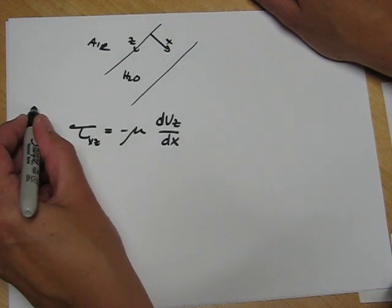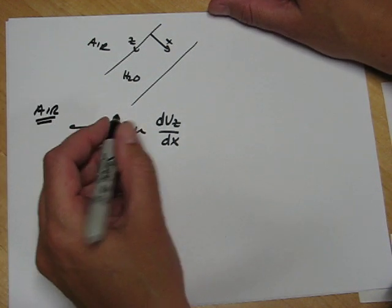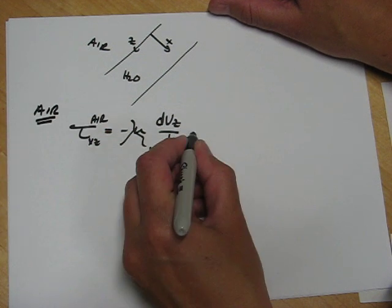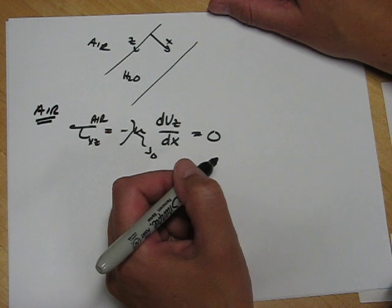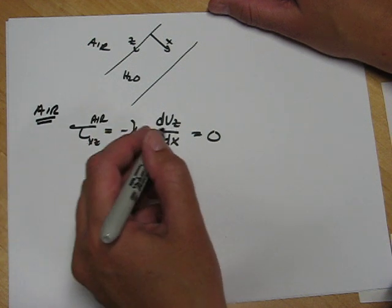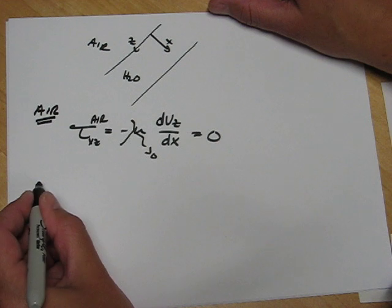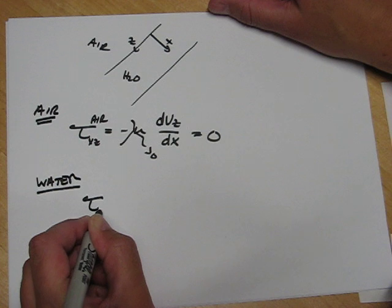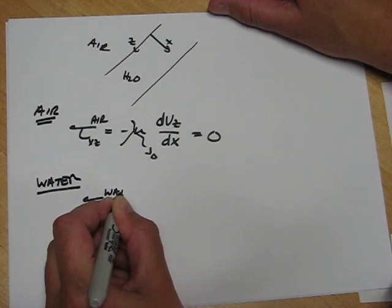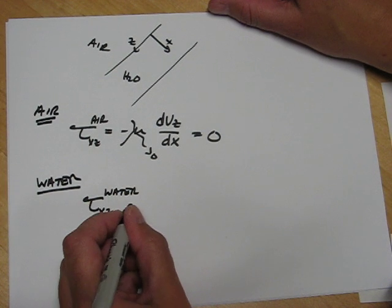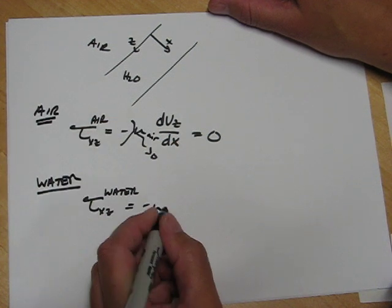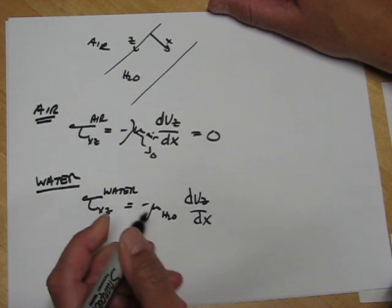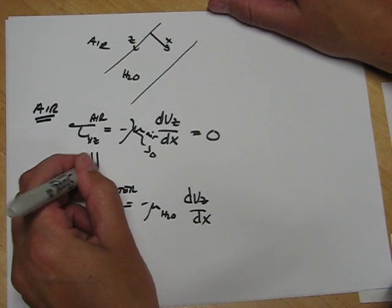So the stress is zero tells us that in the water phase, where we can write the same thing, tau xz of the water is equal to minus mu air minus mu water dvz dx. These two must be equal at that boundary.